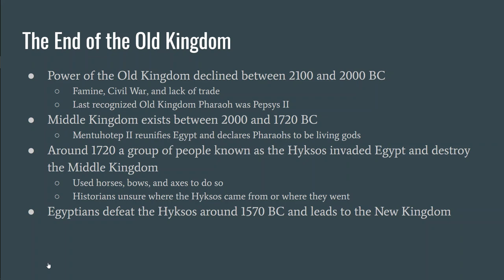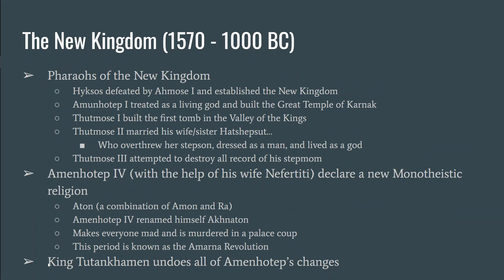The Middle Kingdom ended when a group of people known as the Hyksos invaded Egypt. We don't know where the Hyksos came from — some say modern-day Turkey, others say southern Africa. What we know is they destroyed the Middle Kingdom, ruled for about 150 years, and then the Egyptians got rid of them. The Hyksos brought horses, bows, axes, and chariots to Egypt. When the Egyptians defeated the Hyksos, that led to the New Kingdom.